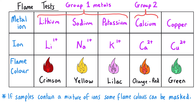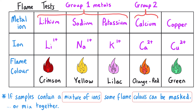Flame tests do have limitations. It isn't a great technique for identifying samples containing more than one metal ion. If we have a mixture of different ions, the flame colours can mask each other or mix together because some coloured flames are more dominant than others, meaning a mixture of two ions might appear to show only one ion.